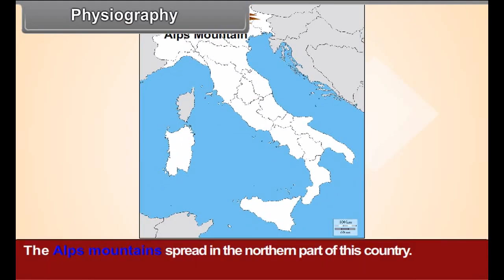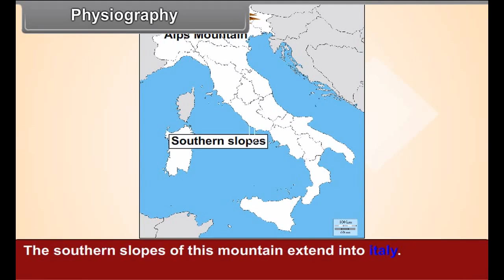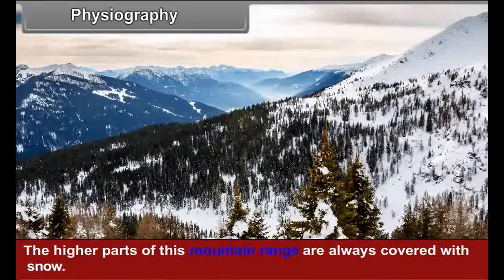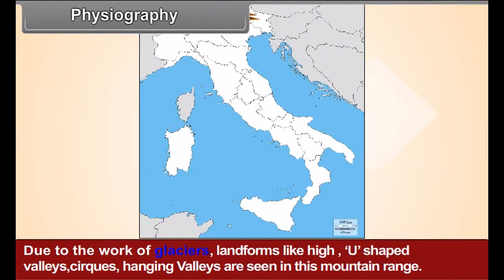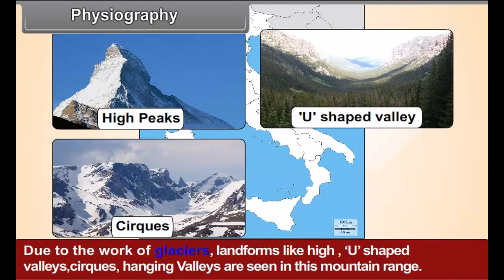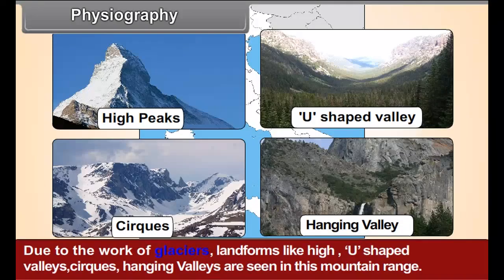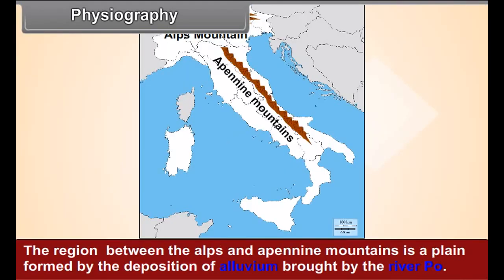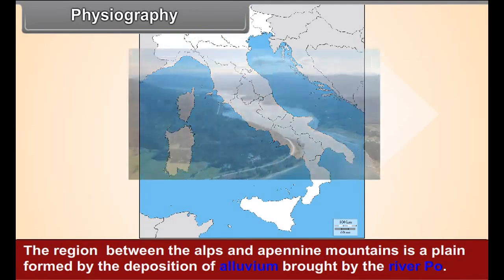Physiography: the Alps mountains spread in the northern part of this country. The southern slopes of this mountain extend into Italy. The high parts of this mountain range are always covered with snow. Due to the work of glaciers, landforms like high peaks, U-shaped valleys, cirques, and hanging valleys are seen. Grand Paradiso (4,061 m) is the highest peak in Italy, located in this region.